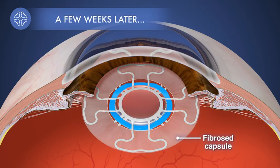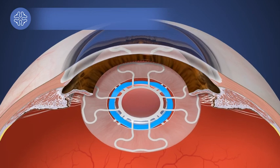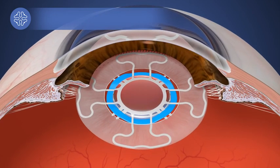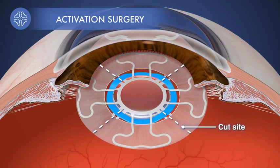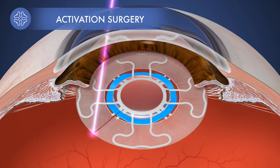After a few weeks, the bag fibroses and becomes stiff, which prevents movement. To restore movement, we activate the Z-Lens by cutting the capsular bag in between the haptics and releasing the restraining device. Activation can be done non-invasively with a YAG or femtosecond laser.